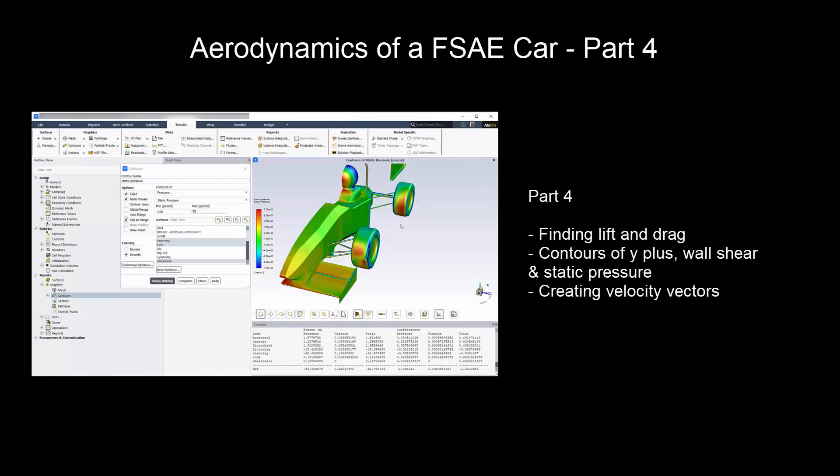Part 4 will cover post-processing of the results from the solver. First, we will find the total lift and drag on the car. Then we will create contours of the Y+, wall shear, and static pressure on the car. We will also create velocity vectors.